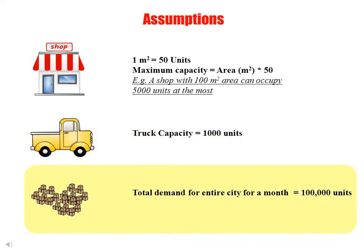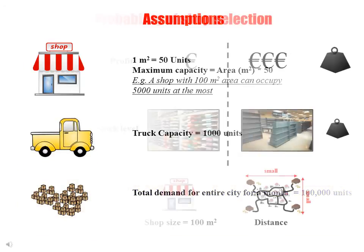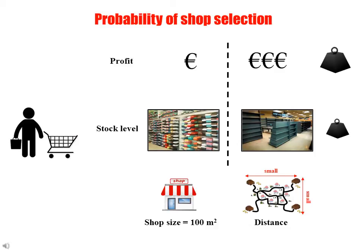Third, the total demand — that is, total units consumed by the entire city — is 100,000 units per month. People buy goods from shops, and the probability that people will buy goods from a particular shop is based on mainly two criteria.